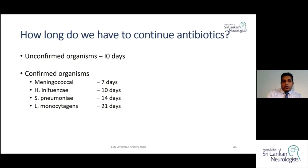How long do we continue antibiotics? If the organism is unknown, give broad-spectrum therapy for 10 days. If meningococcal or Haemophilus influenzae, treat for 7–10 days. Streptococcus pneumoniae requires 14 days, and suspected Listeria monocytogenes should be treated for 21 days.